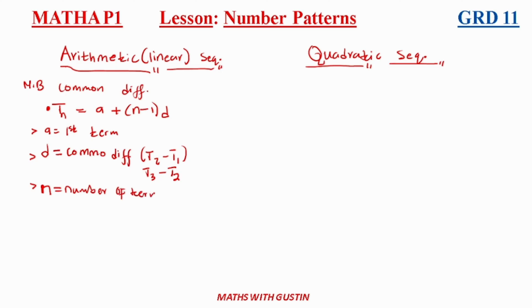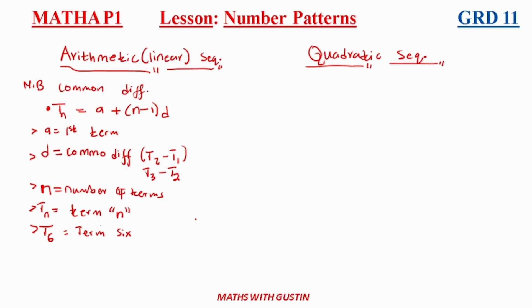'Tn' refers to term n — it could be any term. For example, T6 means term six, or the term at position number six.